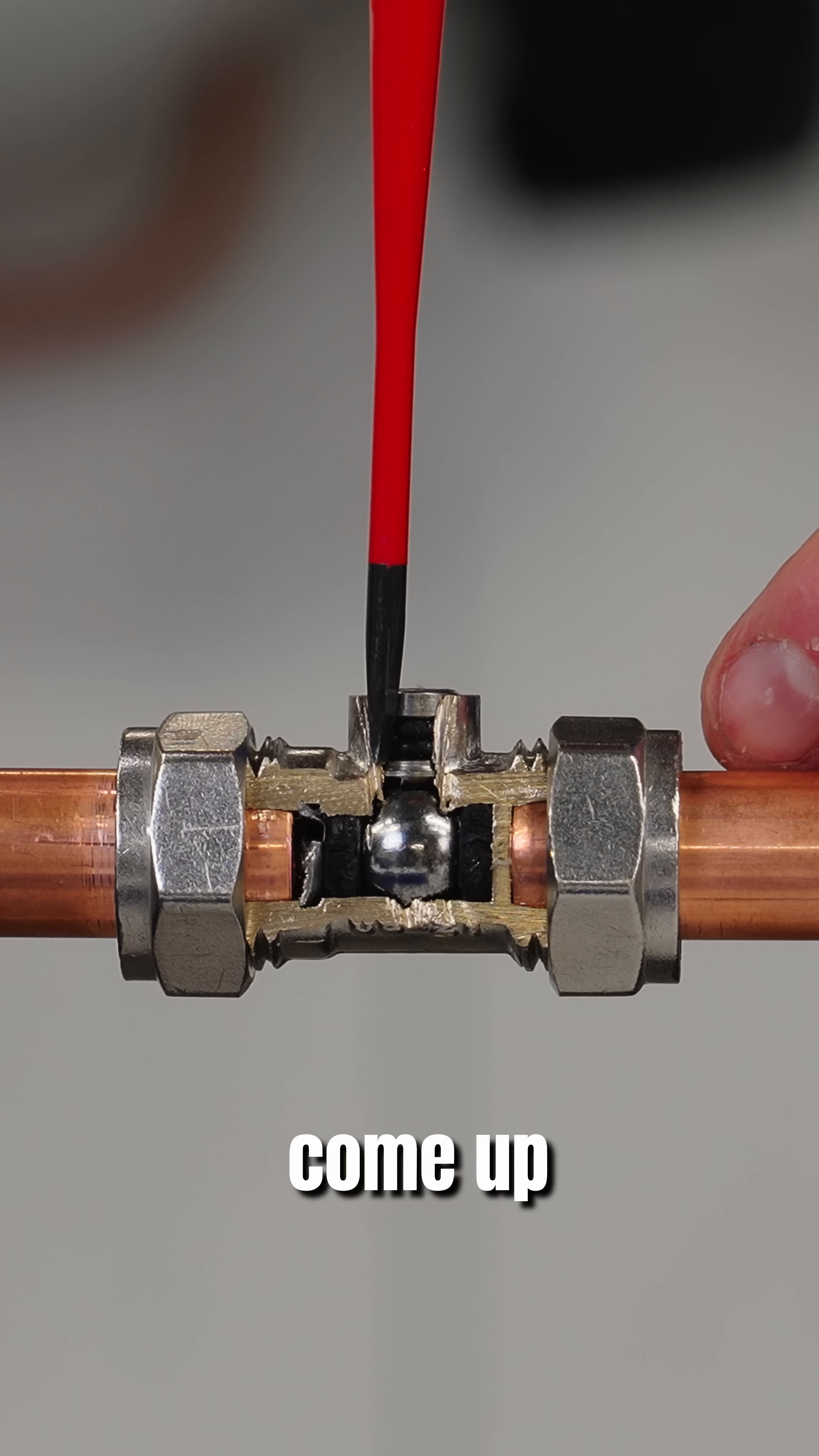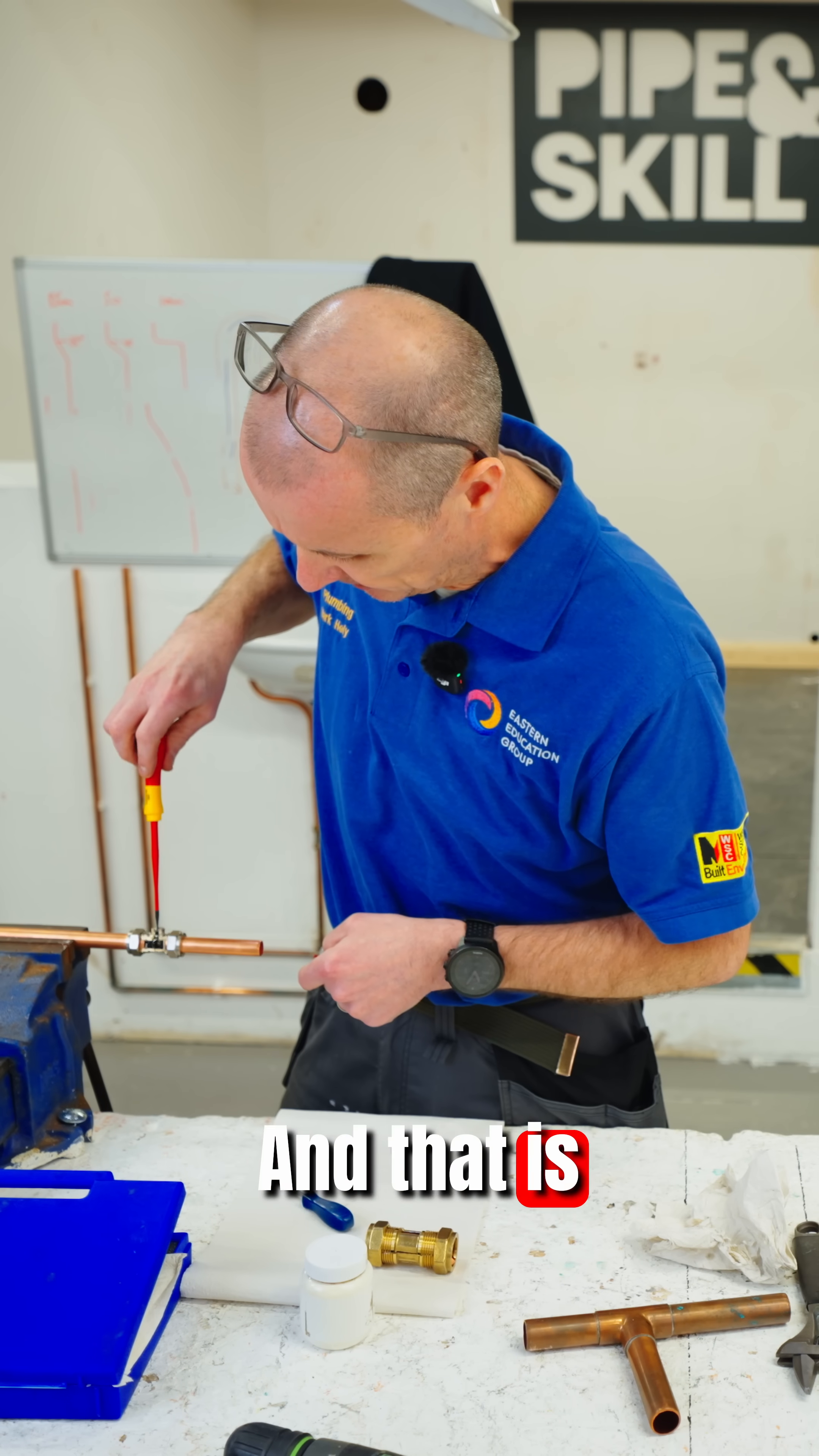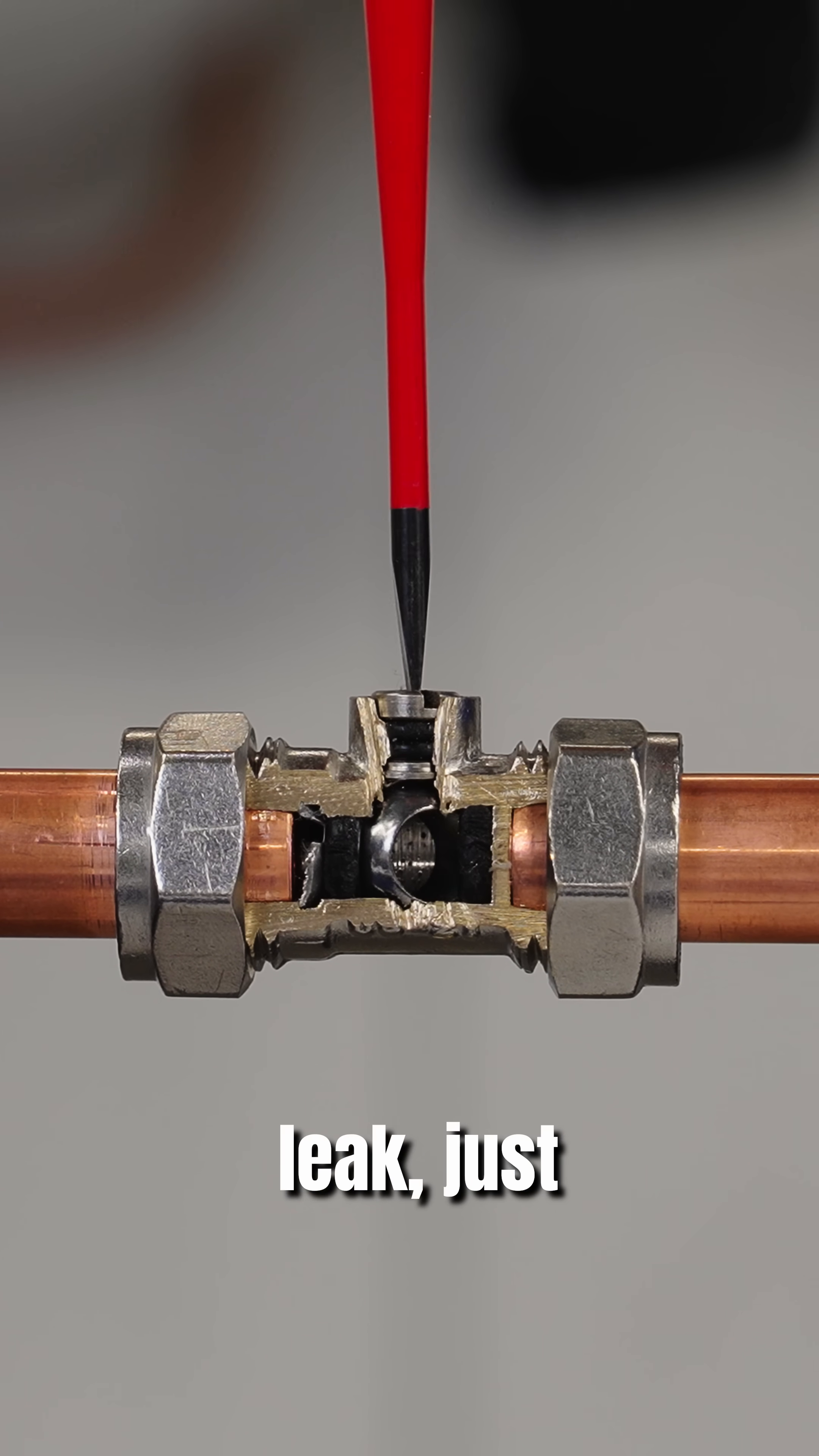Come up through the two washers because they're damaged and then leak out the top. But it's always from that top bit of these two washers. And that is the inside of a ball valve or an isolation valve. If you do leak, just change the valve.